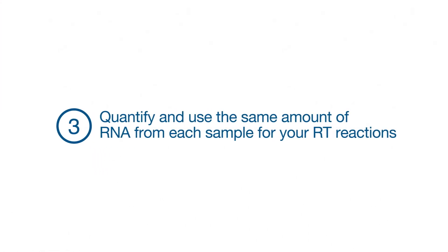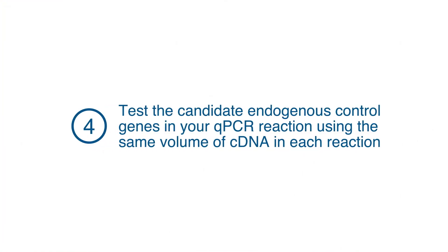Third, quantify and use the same amount of RNA from each sample. Since you will be validating your control gene, it is vital to keep the template and reagent volumes consistent. Next, test the candidate endogenous control genes in your qPCR reaction using the same volume of cDNA for each reaction.